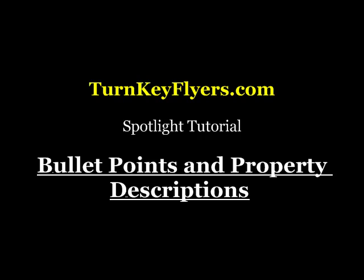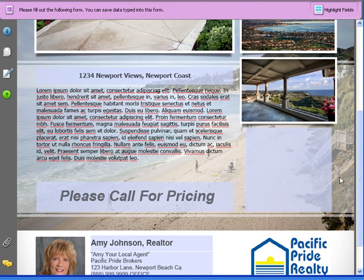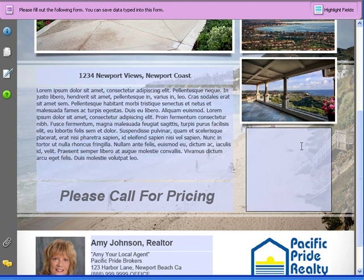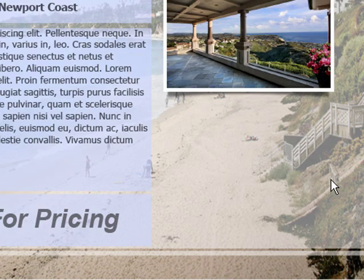Bullet points and property descriptions couldn't be any easier. I'm going to go over a few styles. First, under this area over here, under the right column of photos, is our bullet point area, or what we call our highlight area, for features.